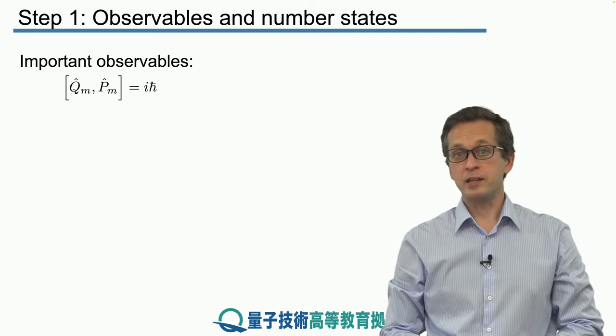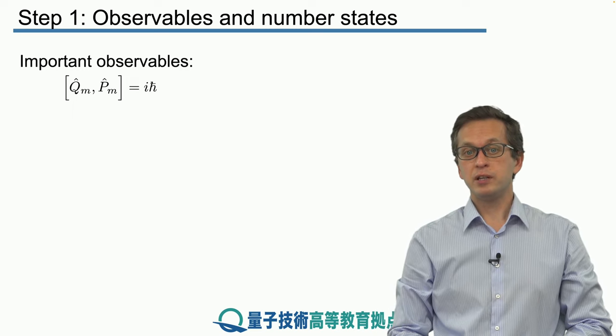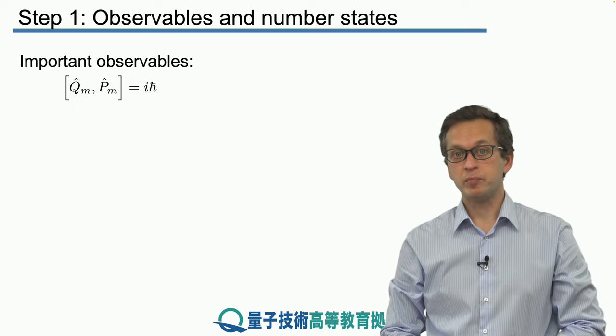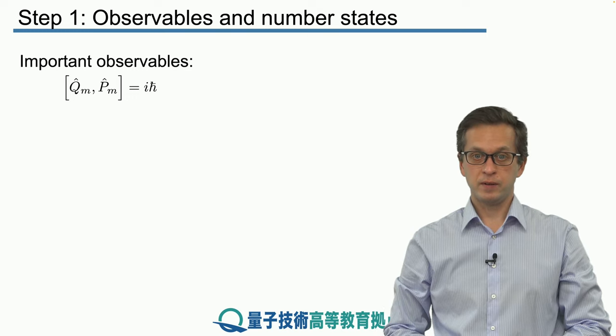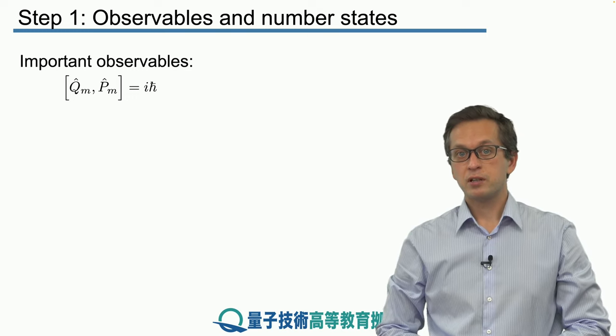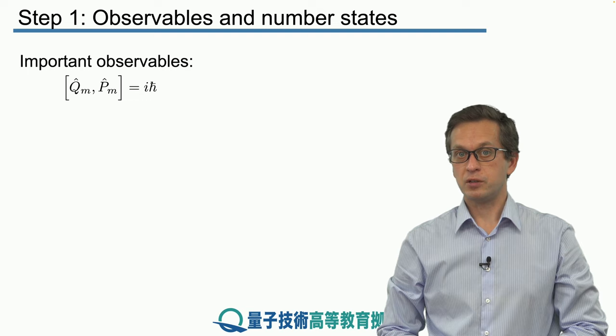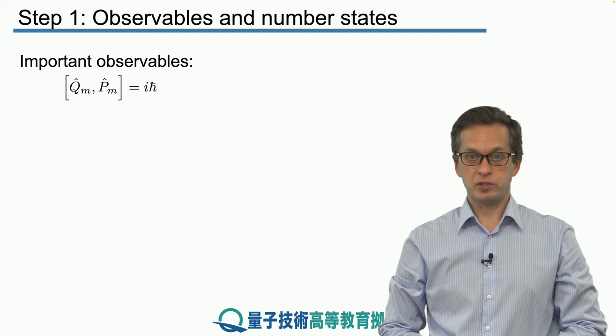They obey the canonical commutation relations, meaning the commutator of Q and P is equal to iℏ. In principle, because Q and P are Hermitian operators, they can be measured and observed.